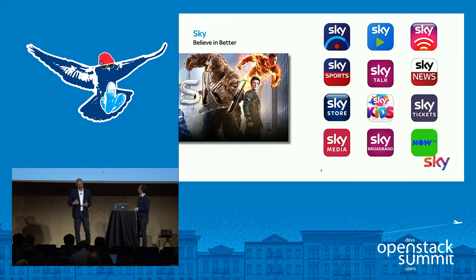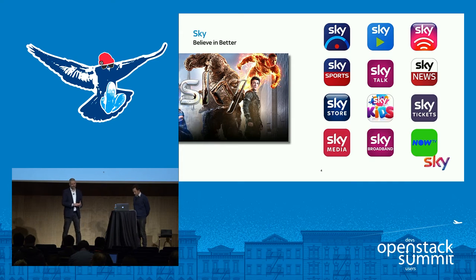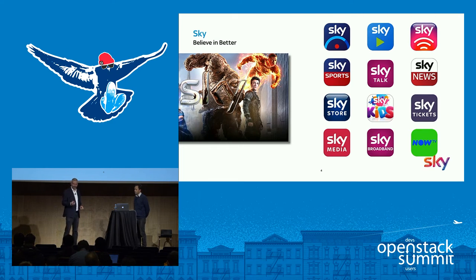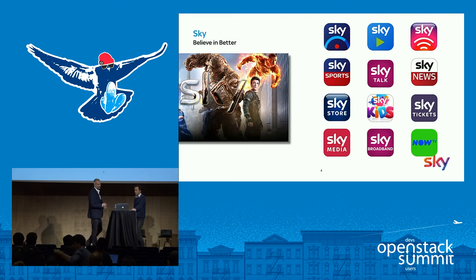Sky is a company with 30,000 employees and around 22 million subscribers. Our primary business is Satellite TV. We're also a telco and ISP with SkyTalk delivering telephony and broadband with DSL and fibre to customers' homes. We do online TV with SkyGo and Now TV, delivering both video on demand and live TV to customers over the internet. SkyMedia is advertising sales for Sky channels and other terrestrial channels.